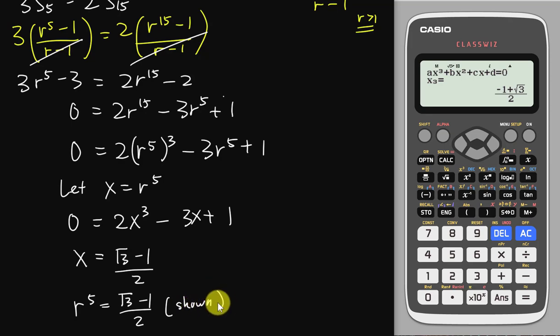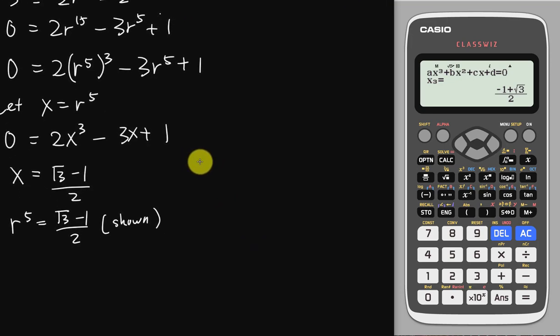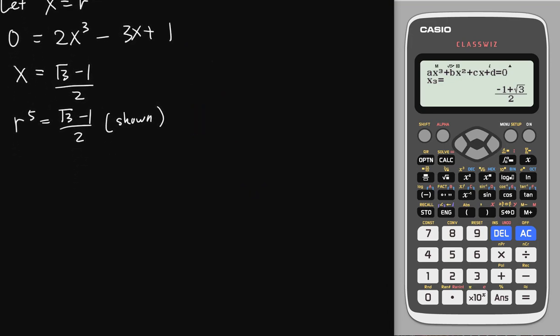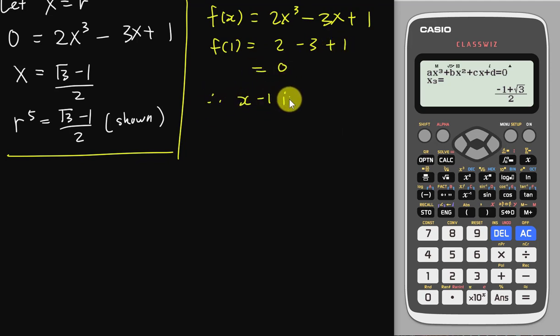Then now I'm going to teach you how to do manually. If let's say we do not want to use a calculator, how are we going to solve this cubic equation? So if we want to solve the cubic equation, we kind of need to use the factor theorem. So the factor theorem, what I will do is I will let f(x) equals to 2x^3 minus 3x plus 1. I need to find out the factor for this equation. So I try to sub 1 because I want to get 0, then I know which is a factor. So I sub 1 into here is 2 minus 3 plus 1 is exactly 0. Then I know x minus 1 is a factor of f(x).